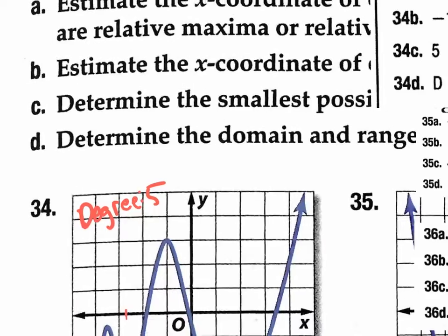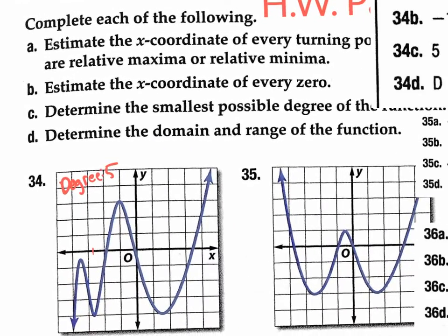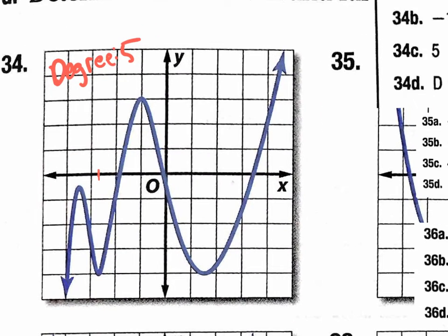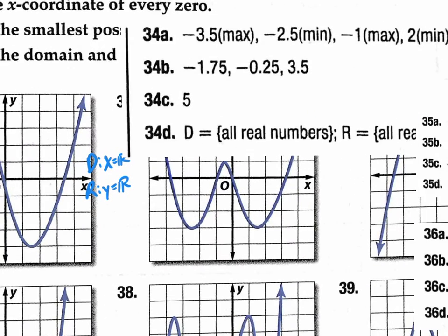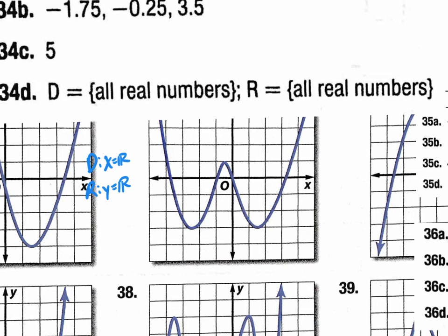Part D: determine the domain and range of the function. The domain — your x-values — does this go to the left forever? Yes. To the right forever? Yes. So the domain is x equals all real numbers. The range: this goes up forever and down forever. So the range is also all real numbers. The book confirms: domain all real numbers, range all real numbers.